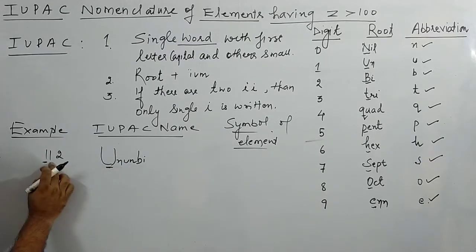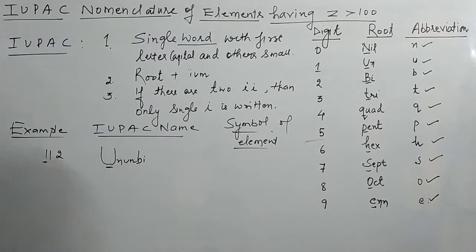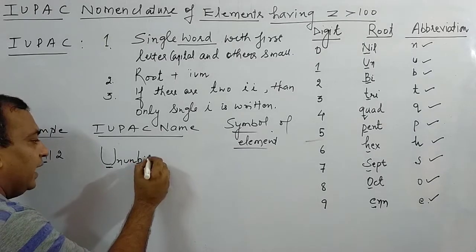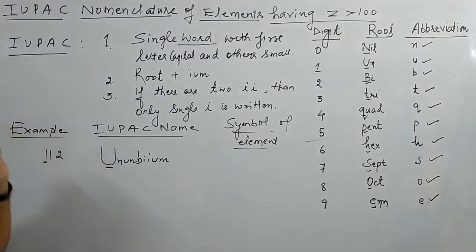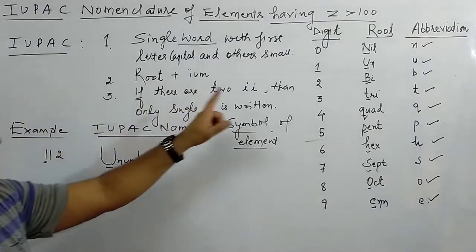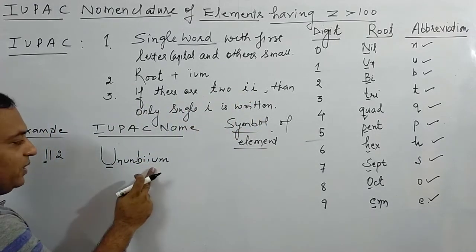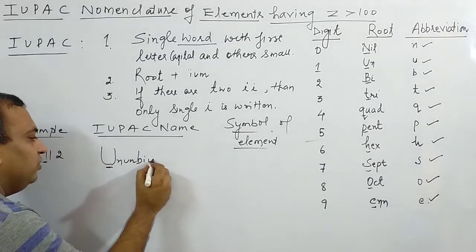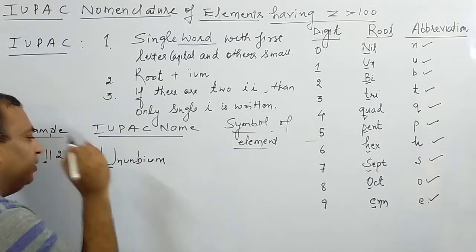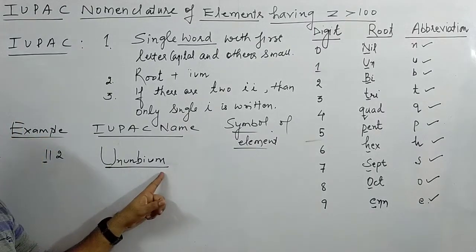For 112: first digit 1 → un, second digit 1 → un, third digit 2 → bi. Adding IUM at the end: un-un-bi-ium. But we notice two consecutive i's appear — the i at the end of bi and the i of ium — so we drop one, giving us the IUPAC name: Ununbium.